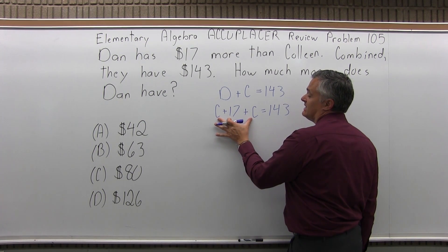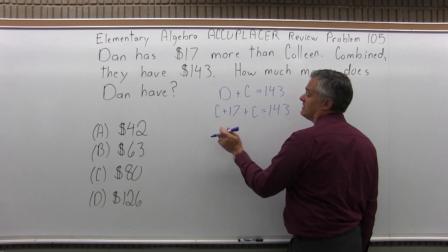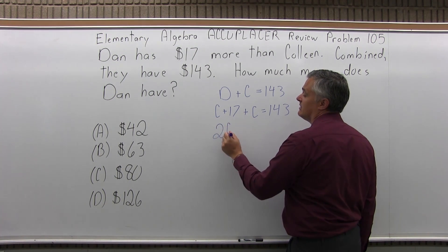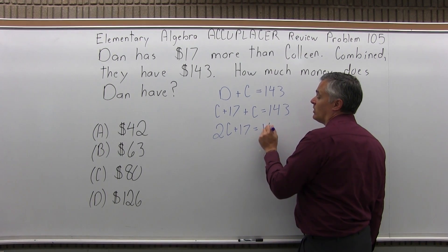So now I have the C in two spots, so let's put them together. C plus another C is 2C plus $17 equals $143.